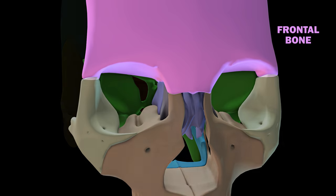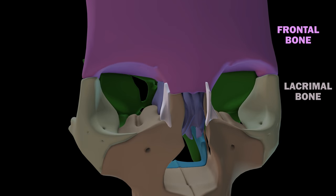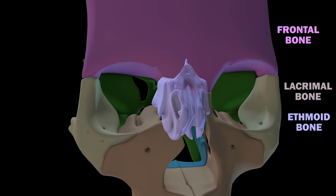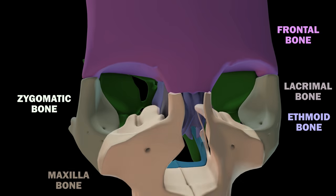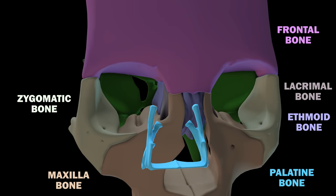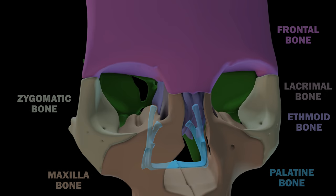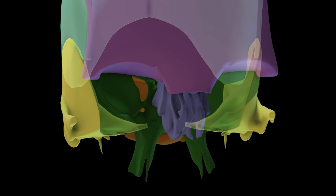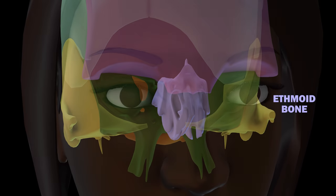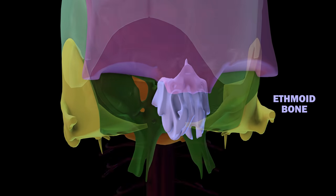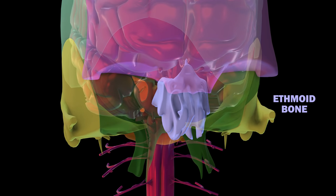The other six bones forming the orbit are the frontal bone, the lacrimal bone, the ethmoid bone, the zygomatic bone, the maxillary bone, and the palatine bone. The ethmoid bone is found between your eyes, located at the roof of the nose, and separates the nasal cavity from the brain.